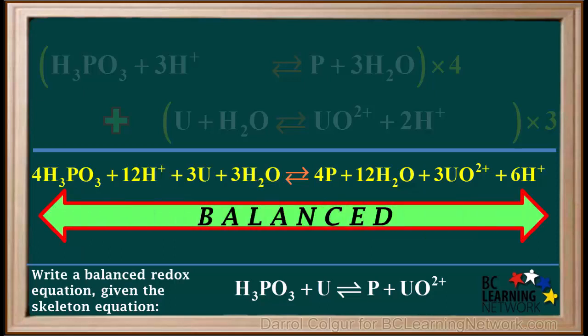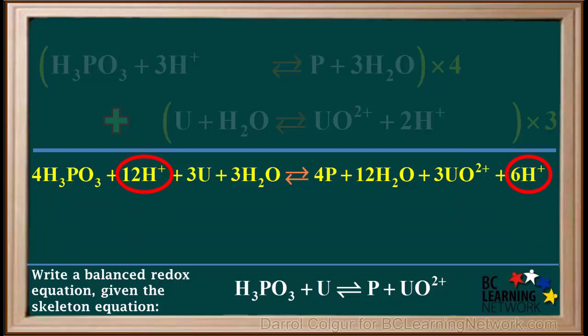And the whole equation is balanced. When you do your own equations, it's good to stop at this point and check that all atoms and charges are balanced. But this equation as written has H-plus ions on both sides, and water molecules on both sides, so it needs to be simplified.